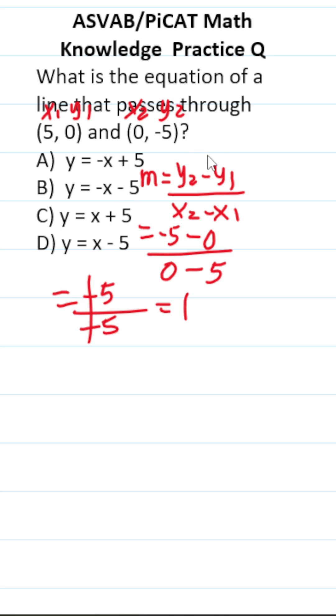So we know m, our slope, is positive 1. If we look through our answer choices, this has a slope of negative 1, therefore it's not correct. This has a slope of negative 1, therefore it's not correct.